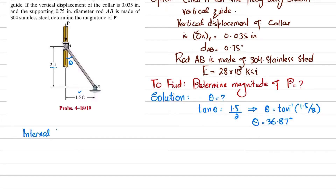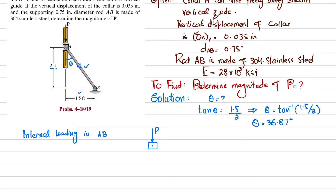Now we find the internal loading in rod AB. For that, take a free body diagram at point A. The various forces acting at point A are: one is load P, another is the force generating in rod AB which is F_AB, and the third is a horizontal reaction force at point A, which we call N.